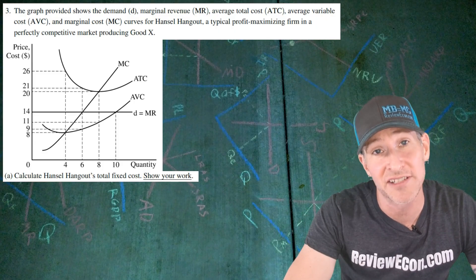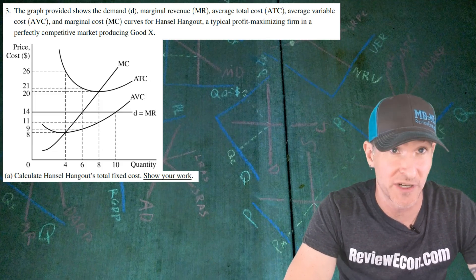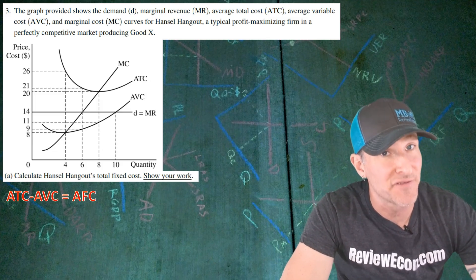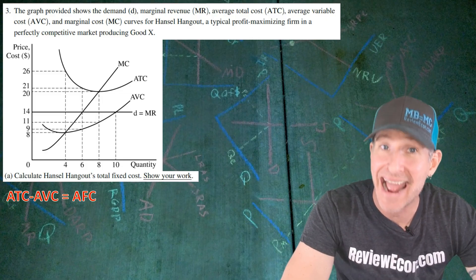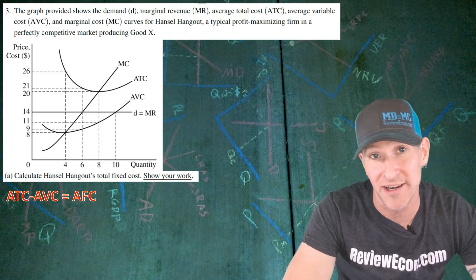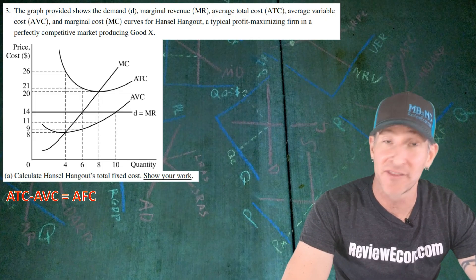Now, there is no total fixed cost on this graph, but you can find the average fixed cost pretty easily. That is going to be found at the difference between the average total cost and average variable cost at any quantity on this graph. And then once you have found the average fixed cost, you're going to multiply that by the quantity to get your total fixed cost.